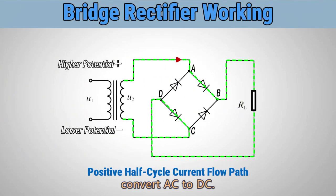A bridge rectifier is used to convert alternating current to direct current. It consists of four diodes arranged in a specific configuration.